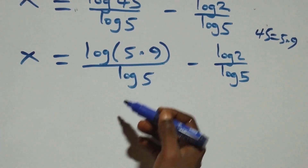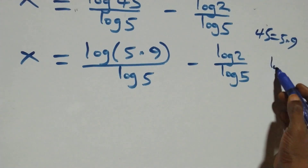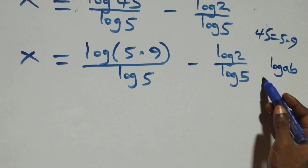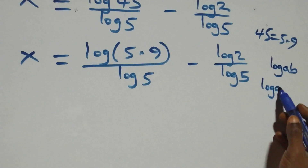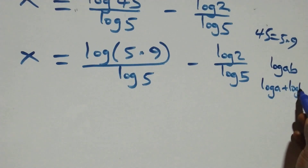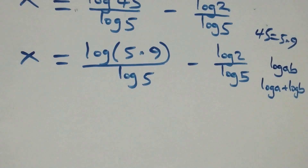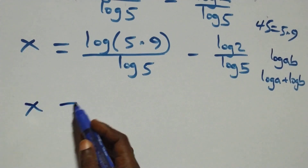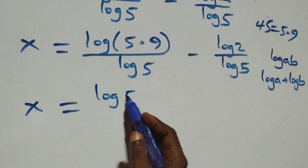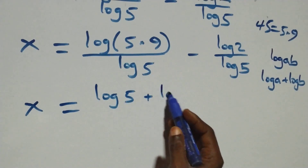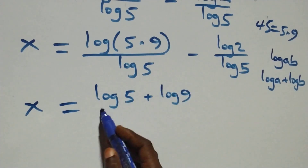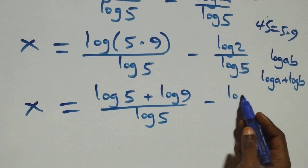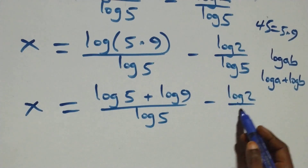This also follows the law of logarithm: log a times b is the same thing as log a plus log b. So this becomes x equals to log 5 plus log 9, all over log 5, minus log 2 over log 5.